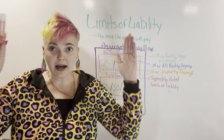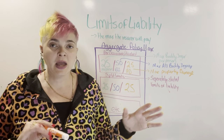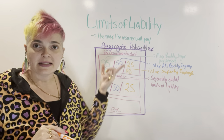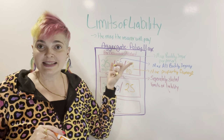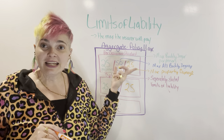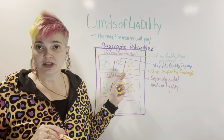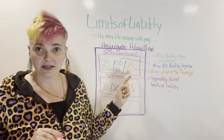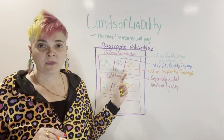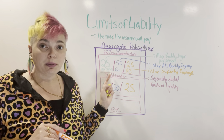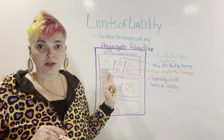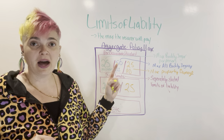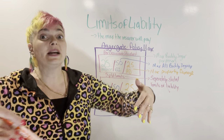As a quick recap: limits of liability is the max the insurer will pay for any one thing. Auto policies and all policies have an aggregate — the policy maximum. The aggregate is broken up by per occurrence, meaning every single accident is a per occurrence. Within each accident, you have a bodily injury limit for medical bills and a property damage limit for damage to their car or other property. Of the $50,000 bodily injury, each person gets up to $25,000, and you get $25,000 for property damage per occurrence — available every time you have an accident until you hit the aggregate.